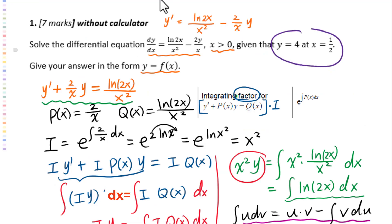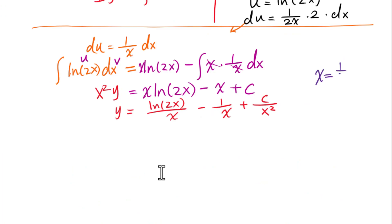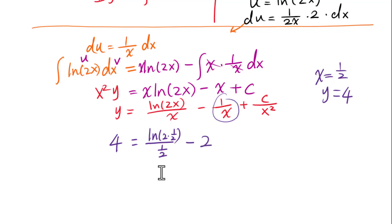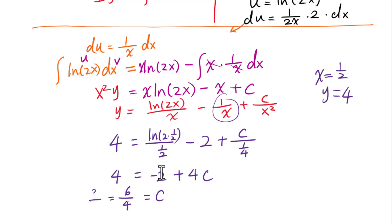We will use the initial condition x equals 1/2, y equals 4 to find C. Substituting: 4 equals natural log of 2 times 1/2 over 1/2, minus 1 over 1/2, plus C over (1/2) squared. Since natural log of 1 equals 0, this becomes 4 equals 0 minus 2 plus 4C, so 4 equals negative 2 plus 4C. Therefore C equals 6 over 4, which is 3 over 2.